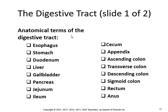Some anatomical terms of the digestive tract: esophagus, stomach, duodenum, liver, gallbladder, pancreas, jejunum, ileum, cecum, appendix, ascending colon, transverse colon, descending colon, sigmoid colon, and rectum. You should definitely know where those are located.